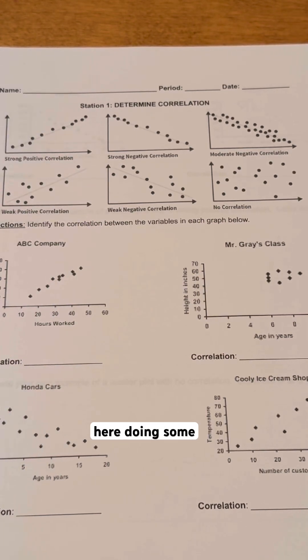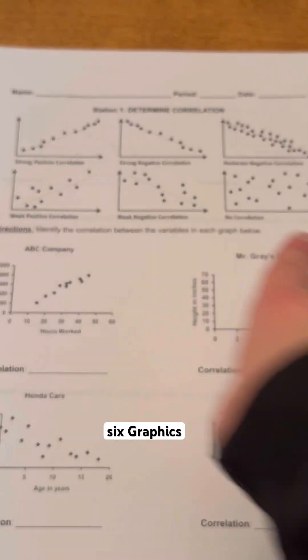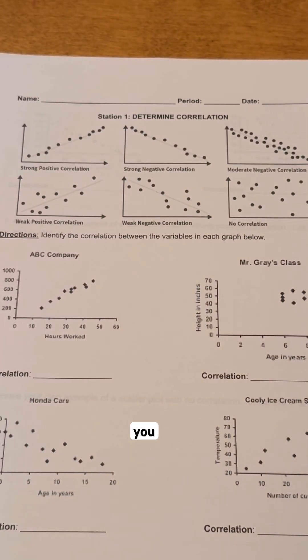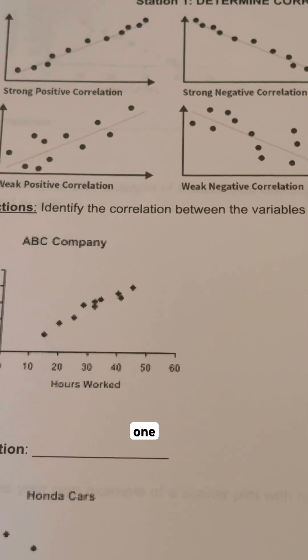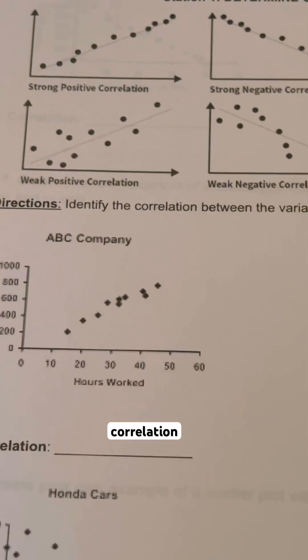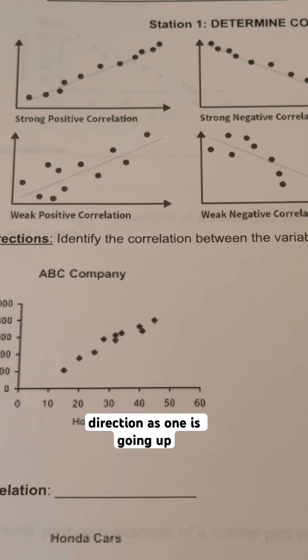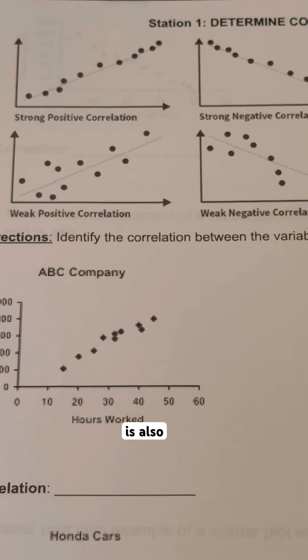Welcome, everybody. I'm here doing some correlation determination. As you can see on the top here, these six graphics are showing you strong positive at the top. You can see the bottom one is weak positive correlation because they are going in a positive direction. As one is going up, the other one is also going up.